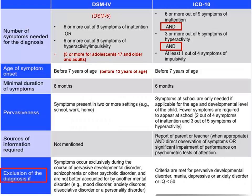The DSM and ICD are the two major diagnostic systems for child and adolescent mental disorders, and the diagnostic criteria for ADHD vary between these two systems. The up-to-date versions are DSM-5 and ICD-10 respectively. DSM lists the core symptoms of inattention and hyperactivity or impulsivity, while ICD requires core symptoms from all three categories to be present. The age of onset is before seven years in both DSM-4 and ICD-10, but this is raised to before 12 years of age in DSM-5.